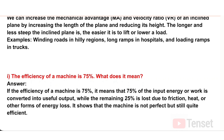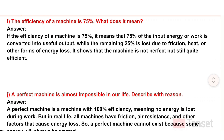I) The efficiency of a machine is 75% — what does it mean? Answer: If the efficiency of a machine is 75%, it means that 75% of the input energy is converted into useful output, while the remaining 25% is lost due to friction, heat, or other forms of energy loss. It shows that the machine is not perfect but still quite efficient.